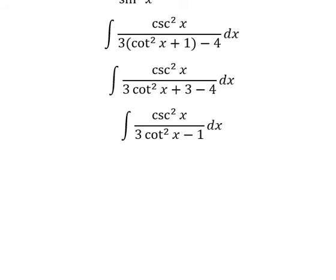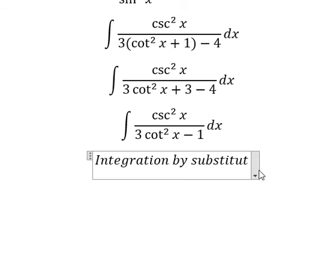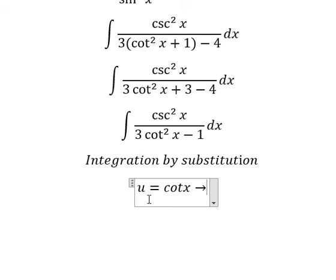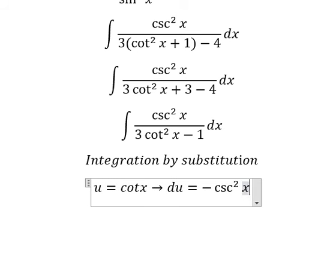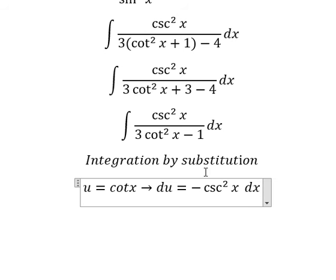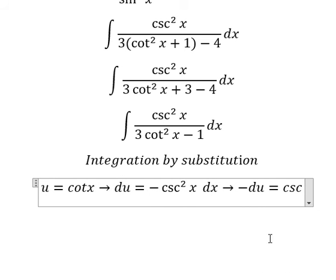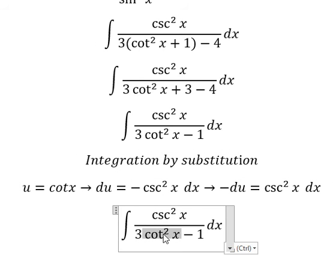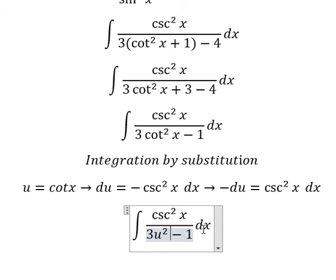Next we need to use integration by substitution. So I will put u equals cot(x). We take the first derivative of both sides, so we have du equals negative csc²(x) dx. We have csc²(x) dx in the integral, but here we have the negative, so we put the negative to the left. We change this for u² and this for negative du.